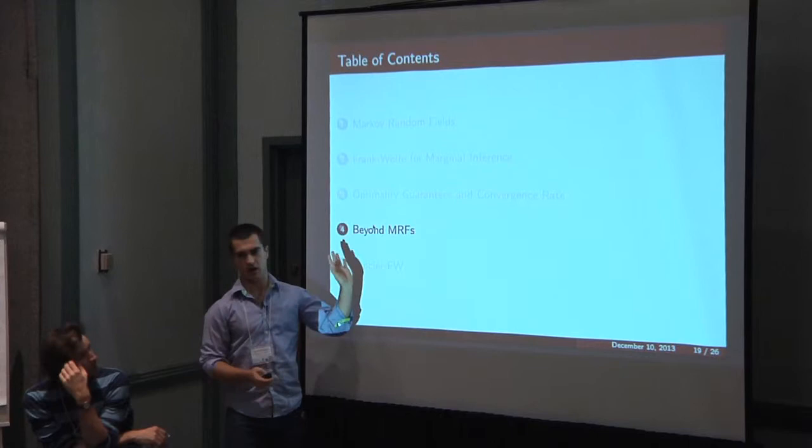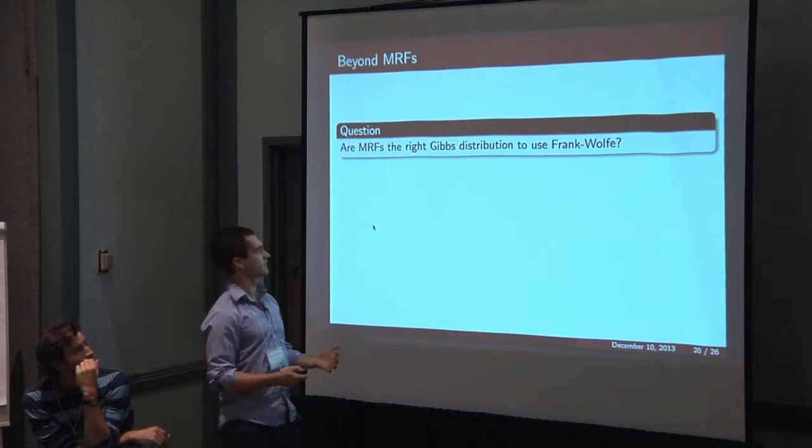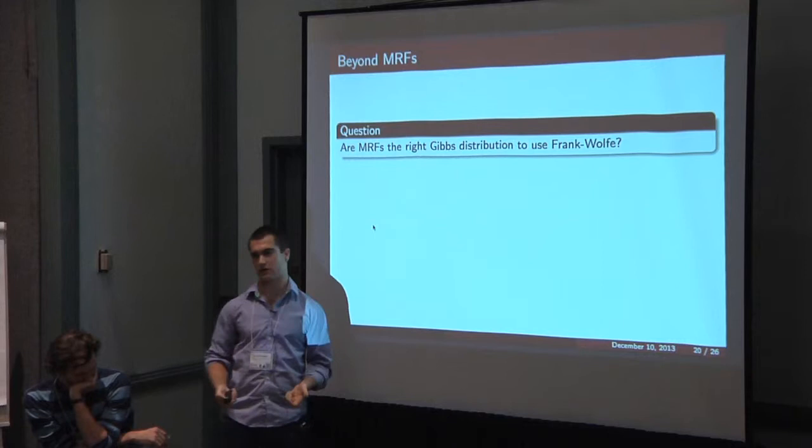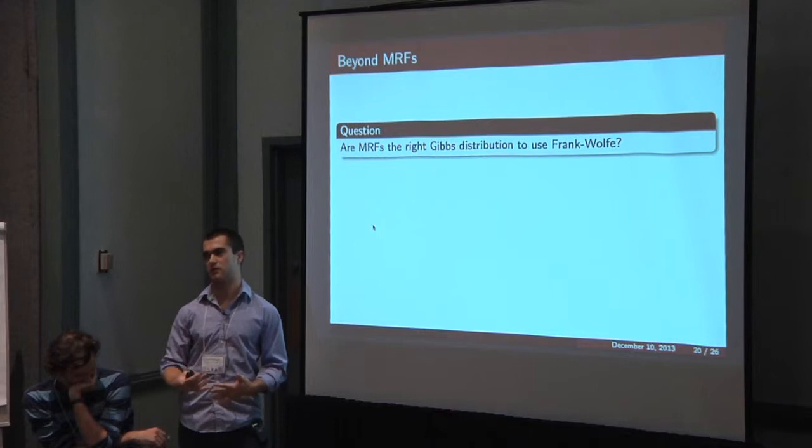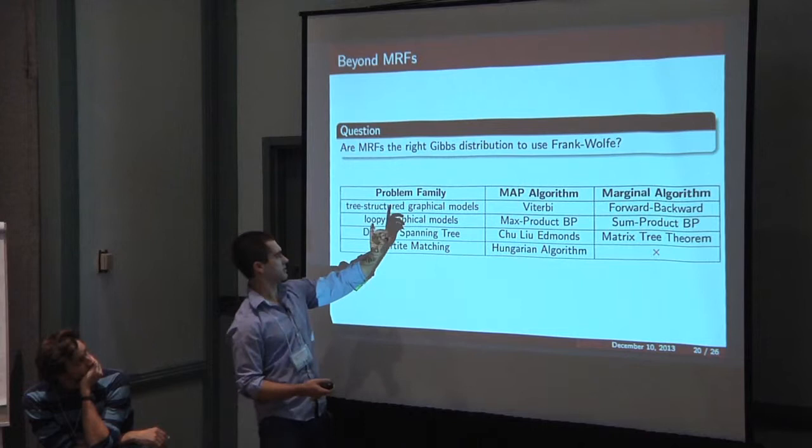Just quickly talking about going beyond this, I think an important question is that I don't necessarily know if Markov random fields are the right Gibbs distribution to use this for, because we have good marginal inference algorithms for Markov random fields already. There are these Gibbs distributions over other combinatorial objects that people consider, like matchings.